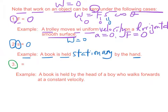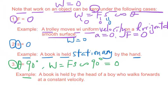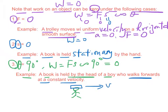Case 3: when theta equals 90 degrees, work equals Fs cos 90 degrees which is 0. An example is a book held on the head of a boy who walks forward at constant velocity. In this case, the displacement and the force supplied by the head to the book are perpendicular, so theta equals 90 degrees.